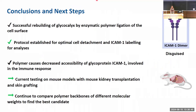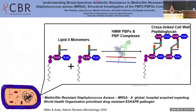In summary, the polymer shows successful results from cell assays and flow cytometry analysis. Ammonia generation experiments verify attachment of the polymer to the cell surface, and results show successful rebuilding of the glycocalyx using polymer ligation. The polymer is currently being tested on mouse models for kidney transplantation and skin grafting. Polymer backbones with different molecular weights continue to be compared to determine the best candidate. Visit me at poster stand number four to learn more.